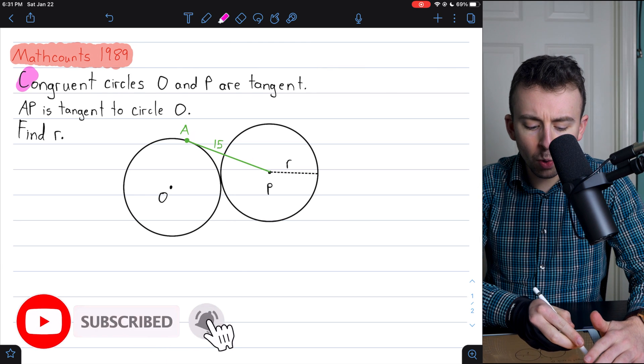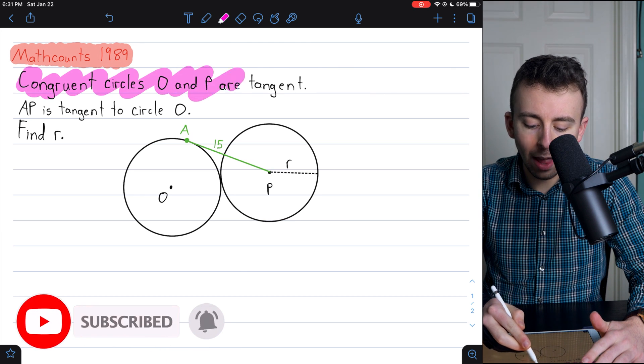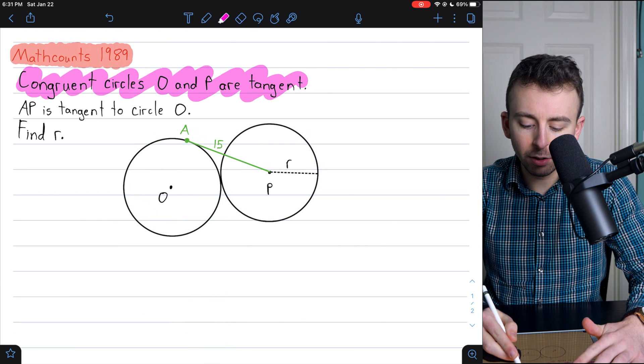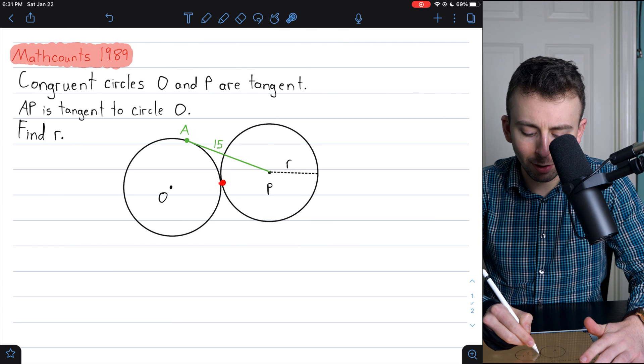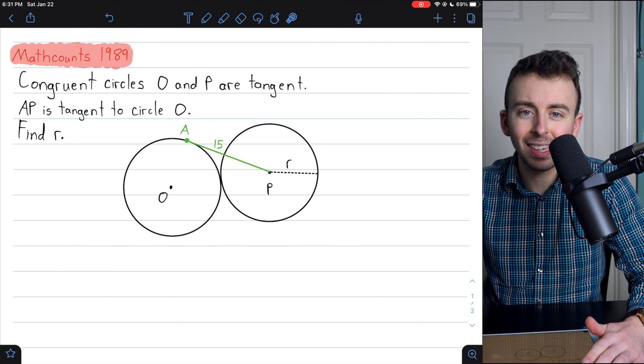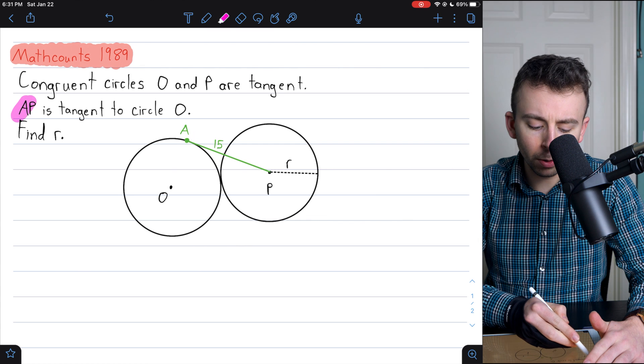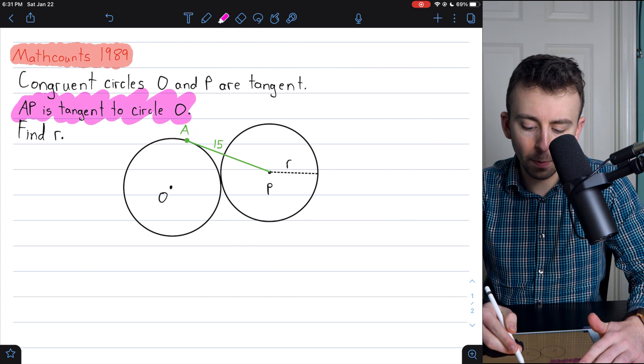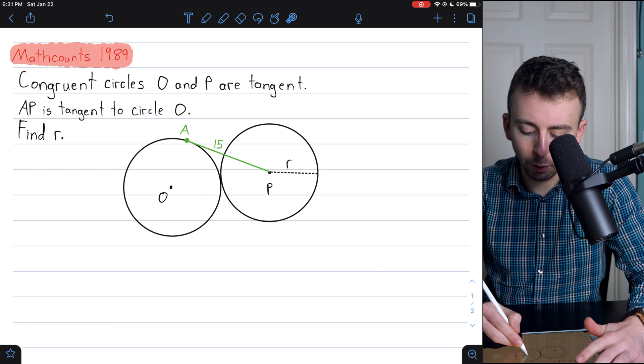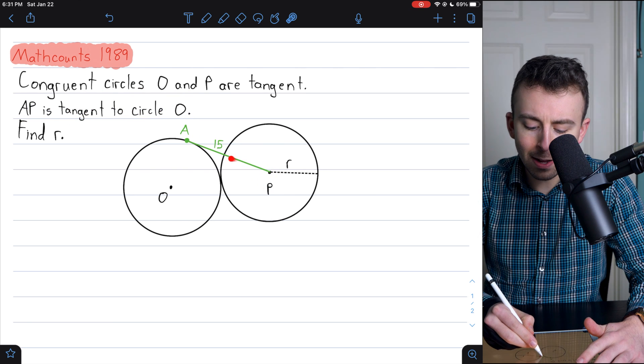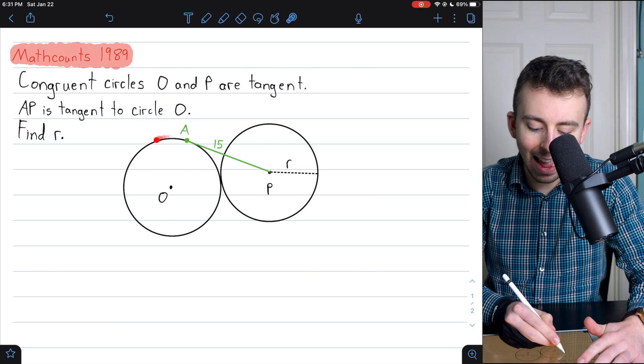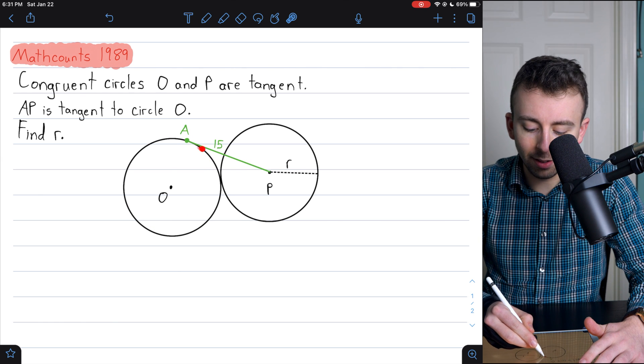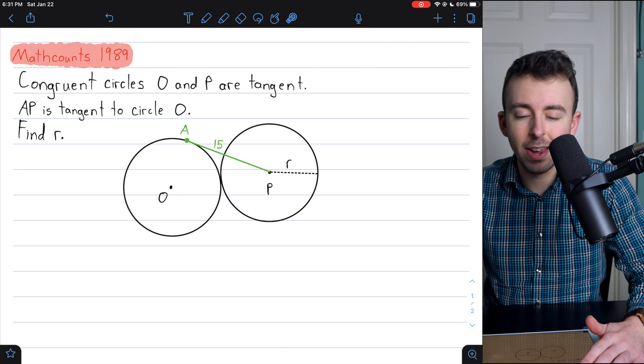Here's the problem. We're given two congruent circles O and P, and we're told that these are tangent circles. So you can see their point of tangency right there, where the circles kiss ever so lightly. We're also told that segment AP is tangent to circle O. That's this segment from the center of circle P to that point of tangency A on circle O. And we're told that this segment has a length of 15.